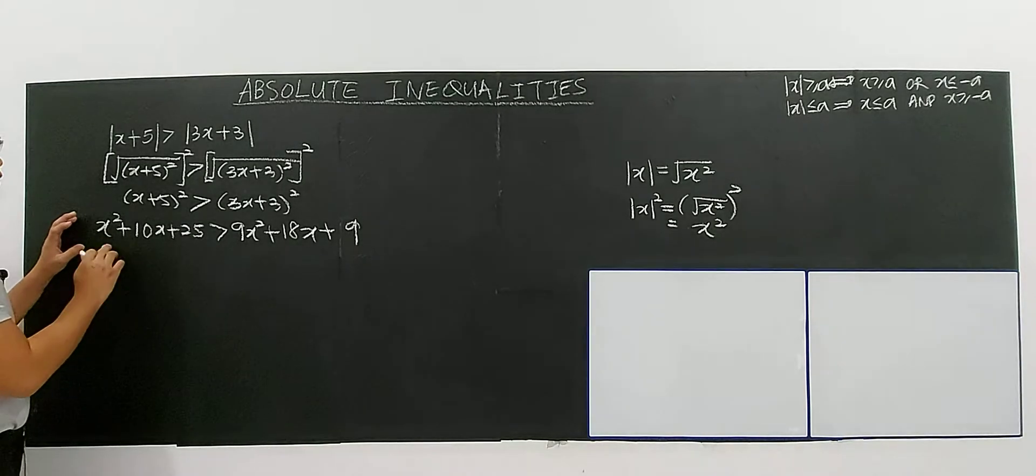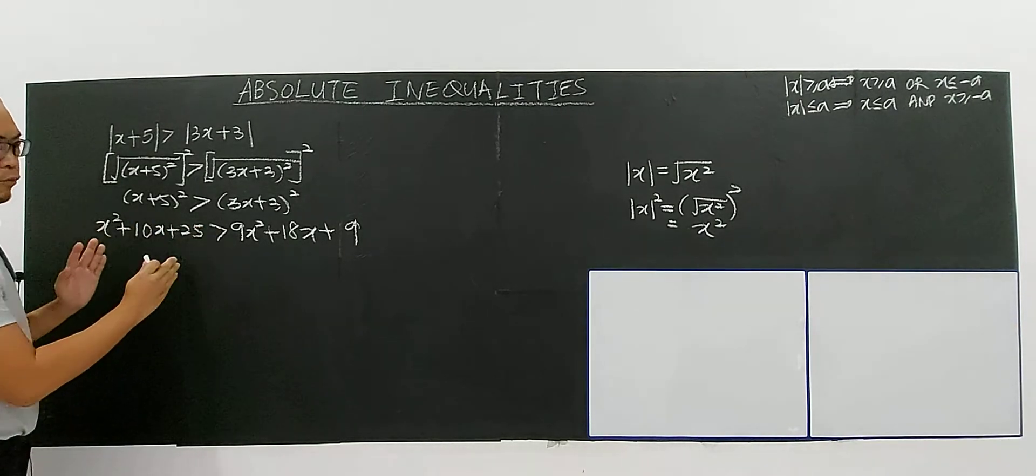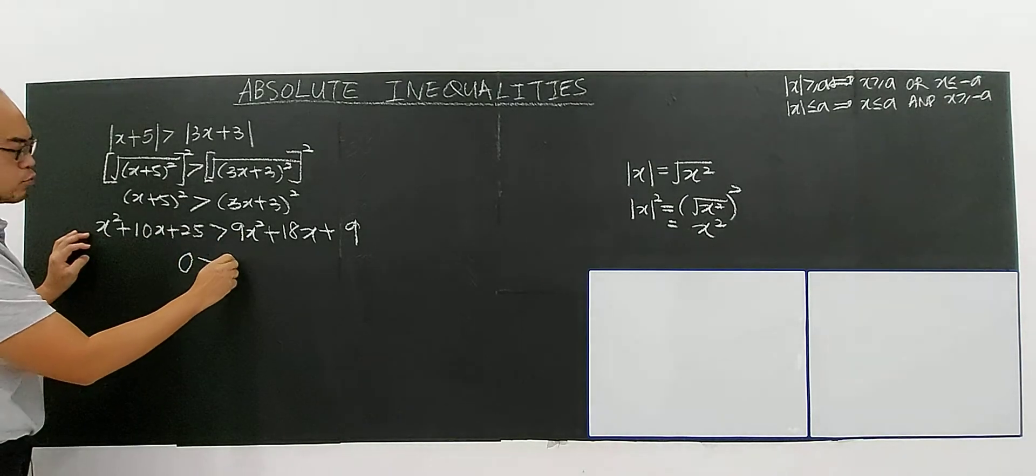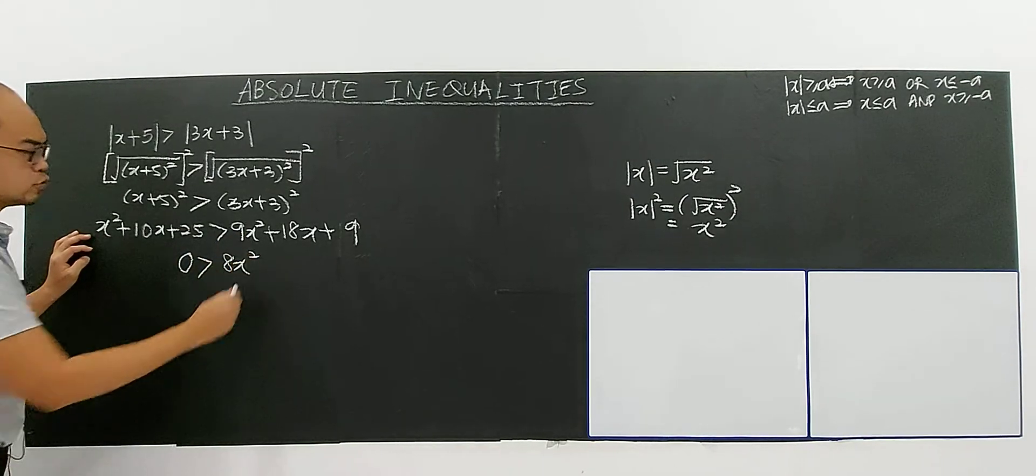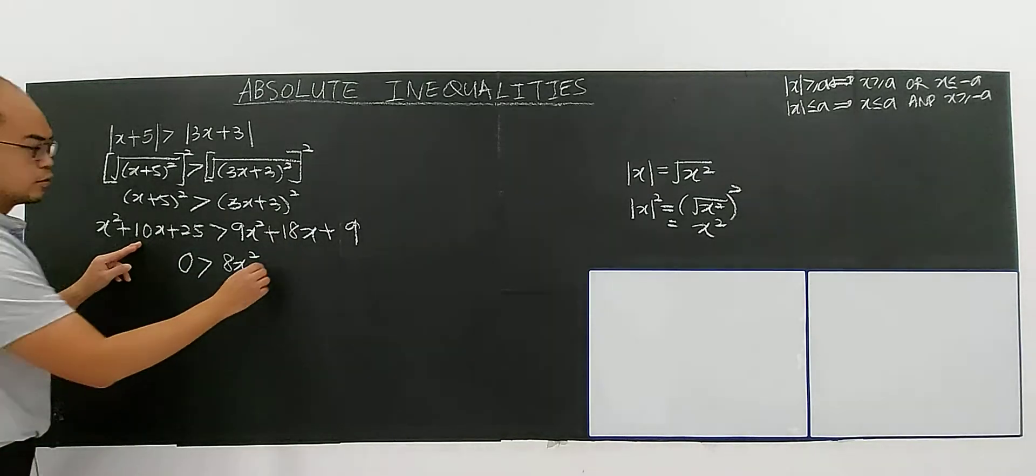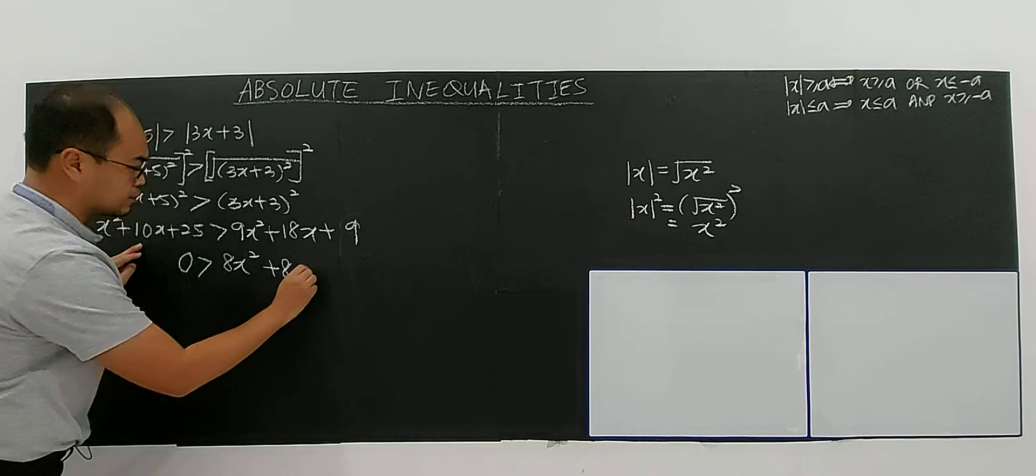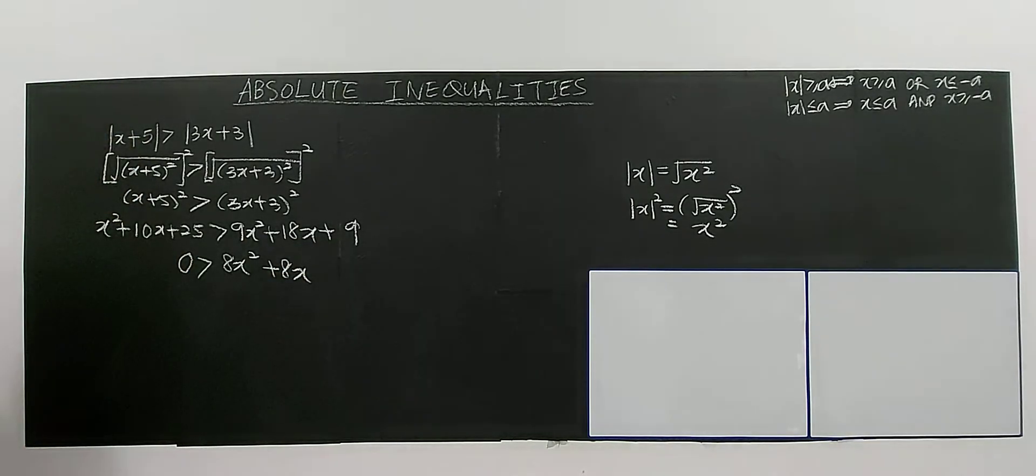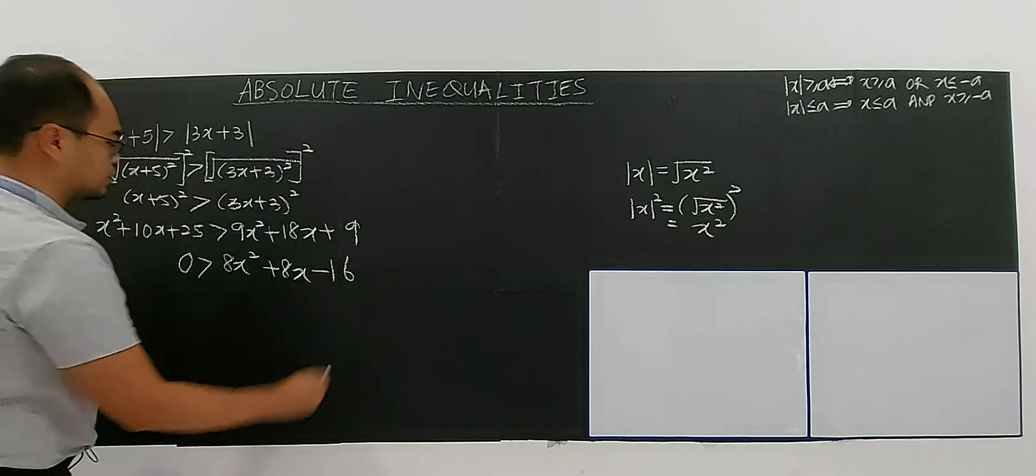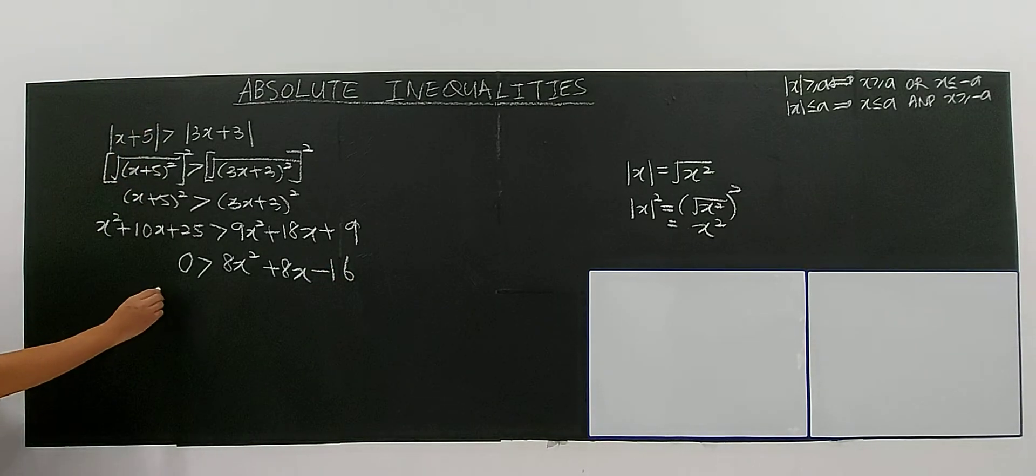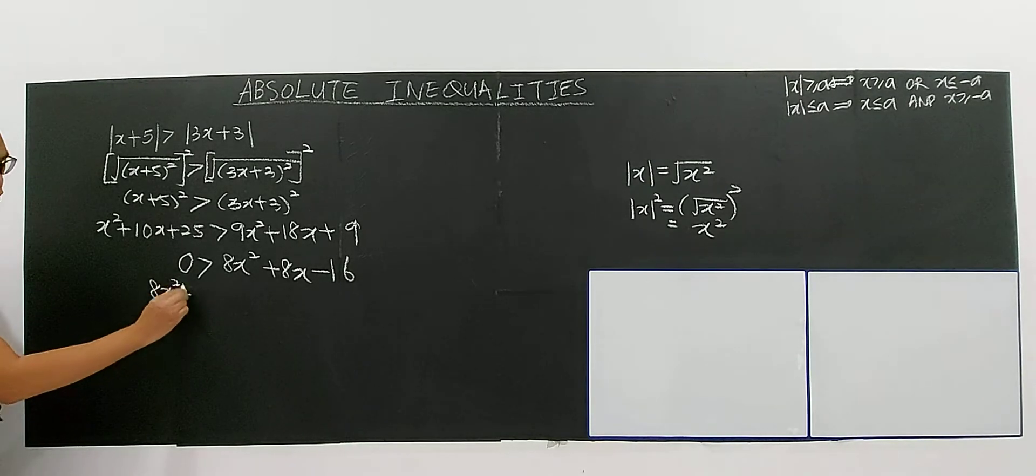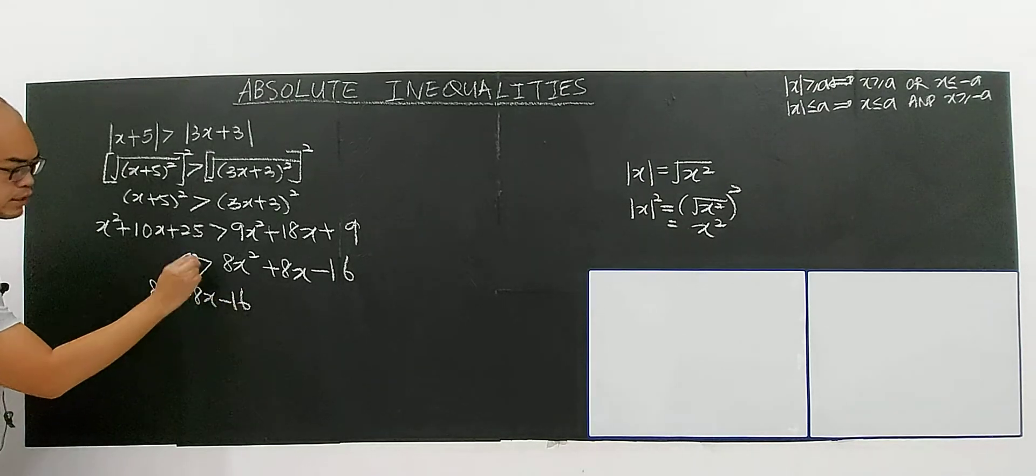So you have a quadratic. So I'm moving, I make it one side zero. I want to make this side zero. So 9x square minus x square, you have 8x to the power of 2. 18x minus 10x, you have positive 8x. 9 minus 25, you have negative 16. So I rewrite, it will become 8x square plus 8x minus 16.